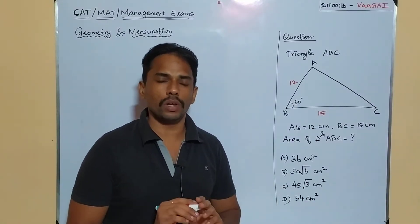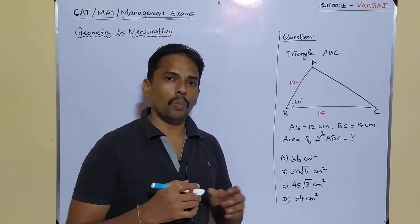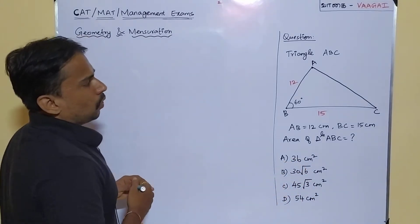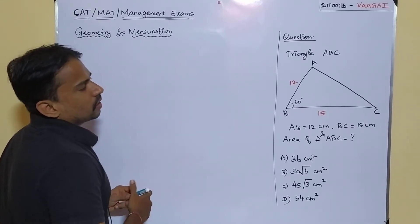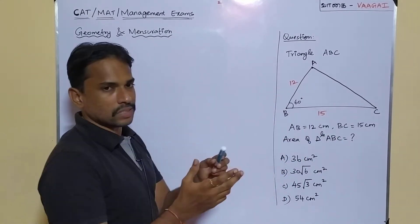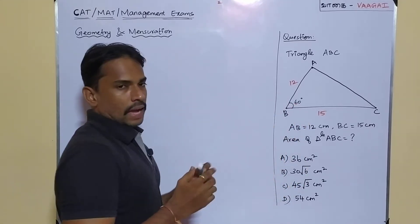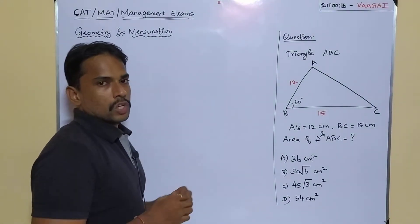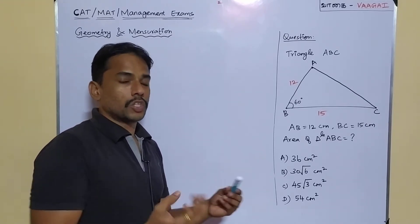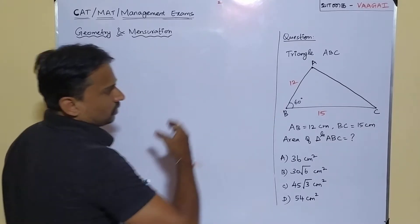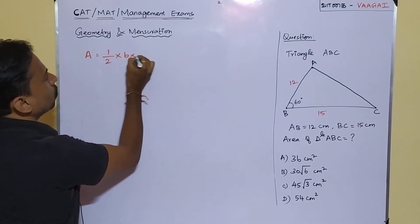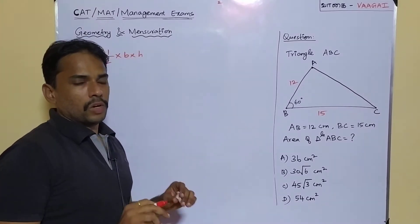This is going to be a very basic question from the concept of area of triangles. We will first solve this problem in a conventional way, then later try the same problem with a shortcut. The basic formula for area of a triangle is: area = half into base into height.